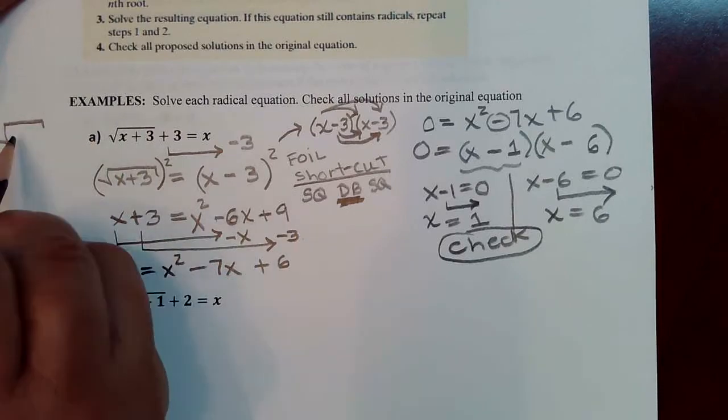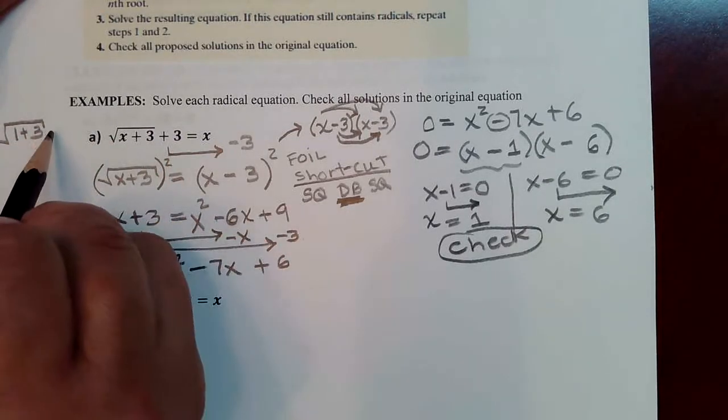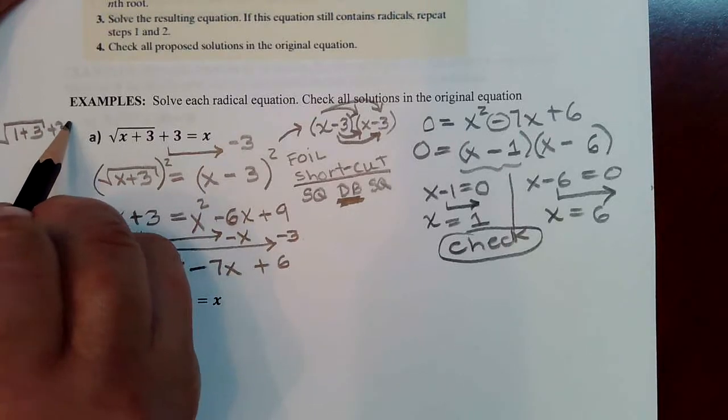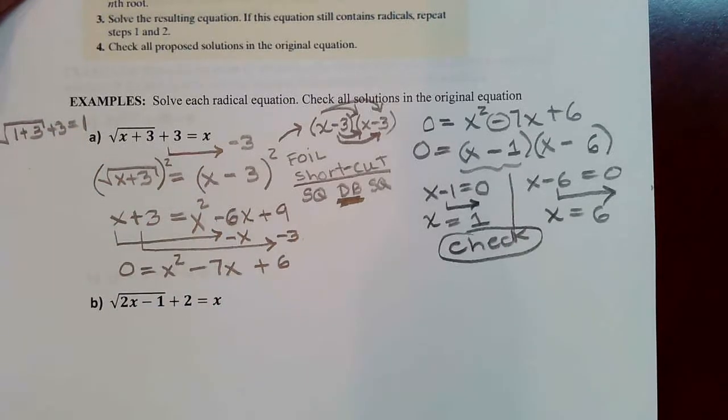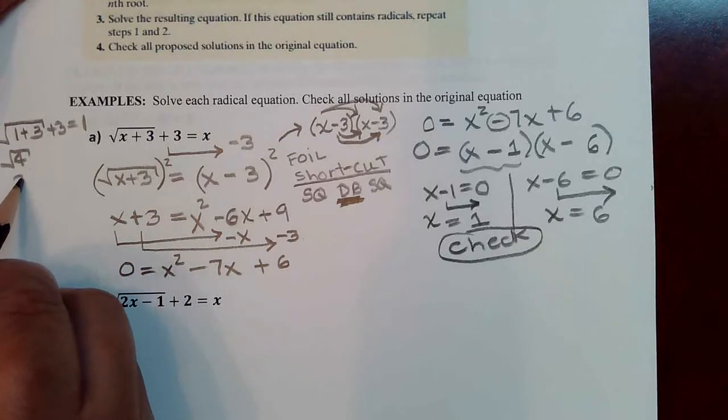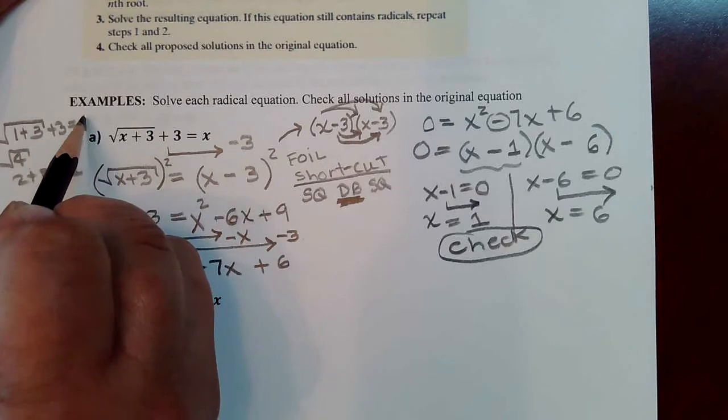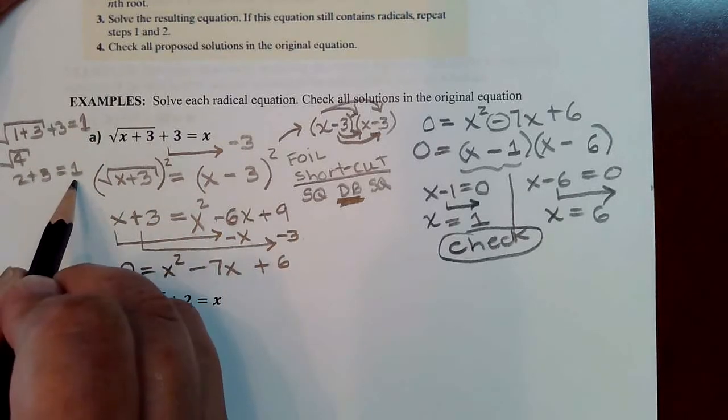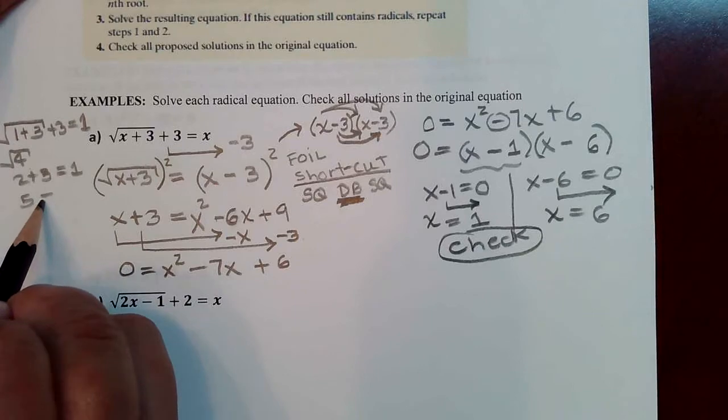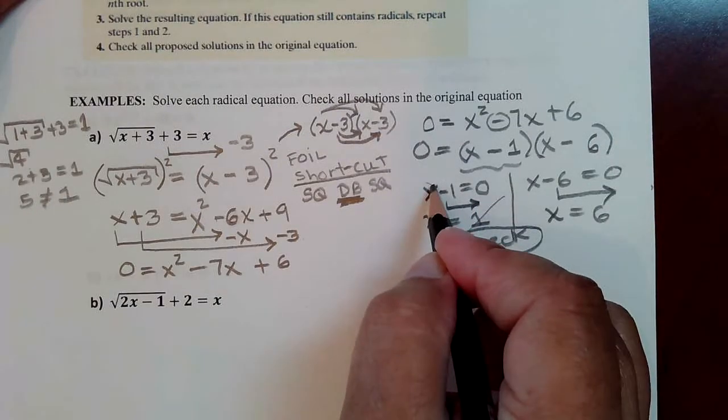If you're checking the answer of 1, you'd be putting a 1 in here for x. On both sides, you'd be putting a 1 where the x is. This would be square root of 4, which is 2. And then, of course, look at what you have here. 5 is not equal to 1. Therefore, we have just found out that this is not a solution.